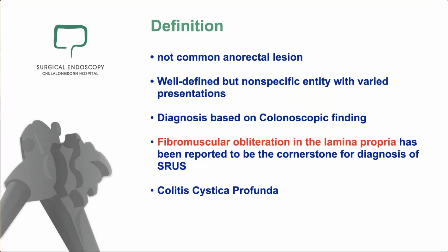As you know, solitary rectal ulcer syndrome is not a common anorectal lesion, but it is well defined, with no specific entity, and with variable presentation — sometimes there are no ulcers at all, despite its name. The diagnosis is based on colonoscopic findings, and fibrovascular obliteration in the lamina propria from pathologic study is the cornerstone for diagnosis. Sometimes we also find colitis cystica profunda, which has mucus lakes or mucus cysts within the submucosal layer, in patients with solitary rectal ulcer syndrome.